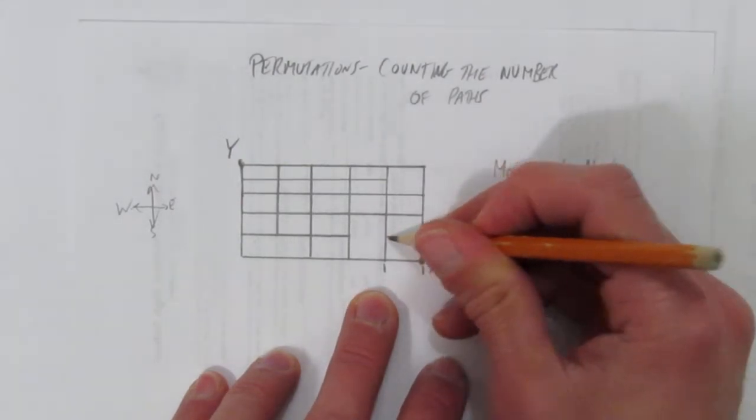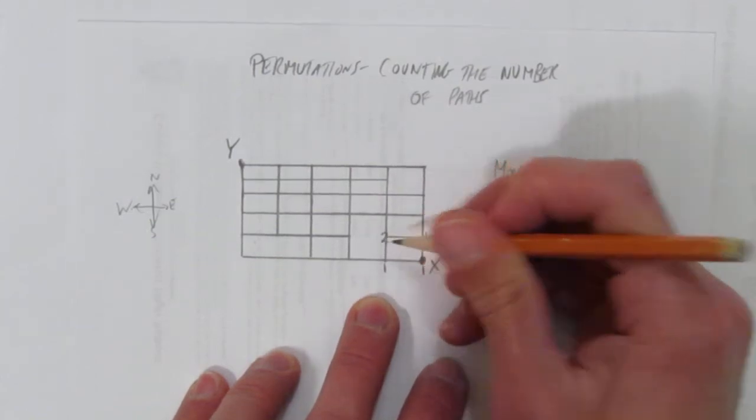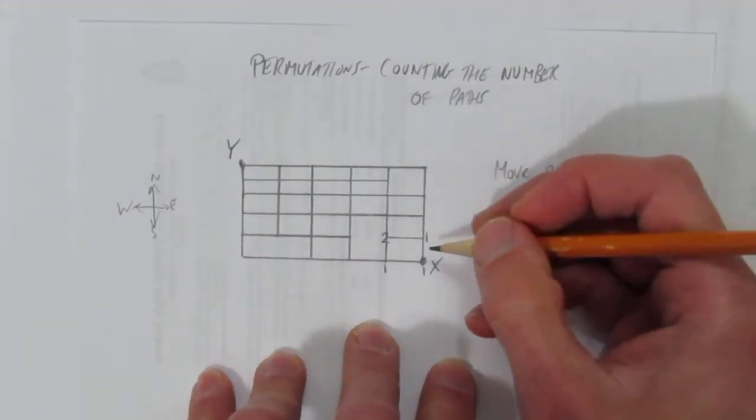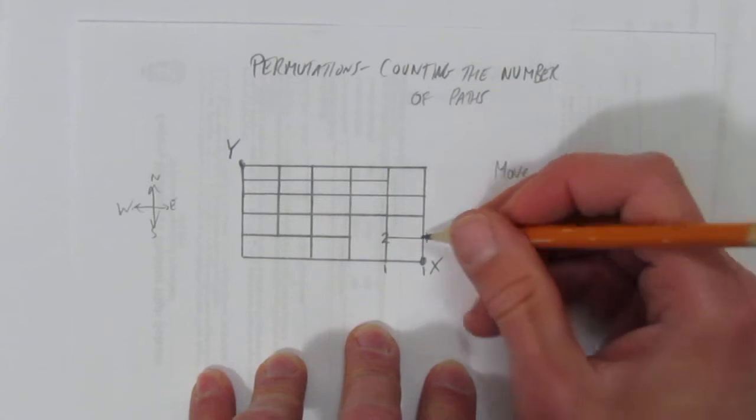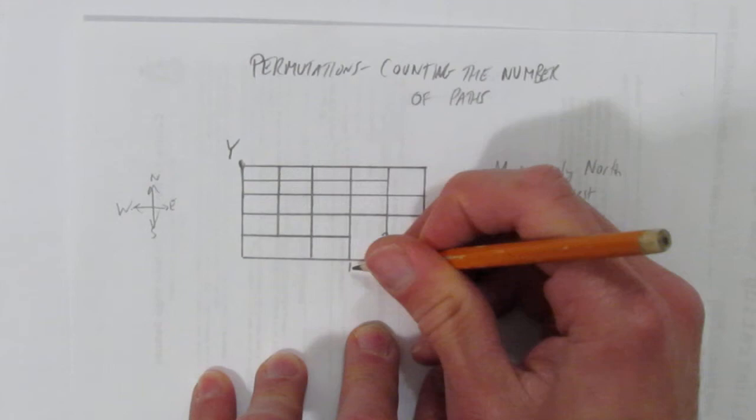But this spot here, you can either come up and go over, or go left and go up. Either way is valid, so there's two ways to get there. And now we just keep doing the same sort of thing. It's based on the idea of Pascal's Triangle. How can you get to this intersection? The only way is to come west. There's one way.